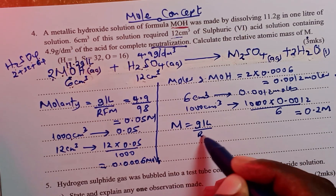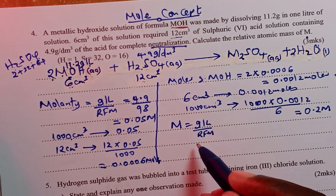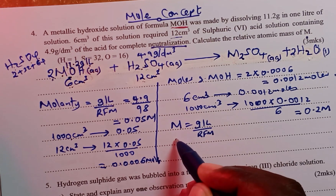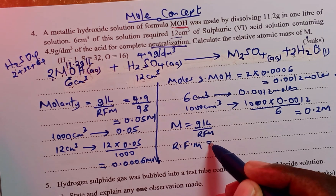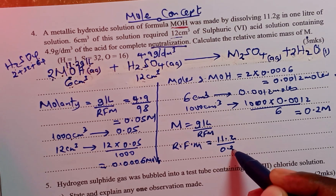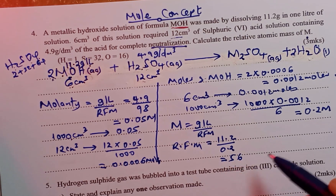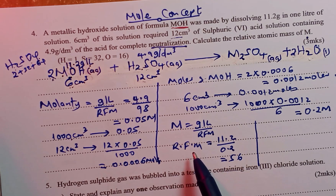To get the relative formula mass of M hydroxide, we take the number of grams dissolved in one liter, which is 11.2, and divide by the molarity of 0.2. This gives us 56. So 56 is the relative formula mass of M hydroxide.